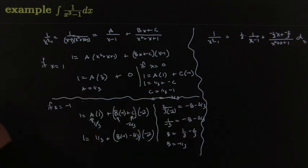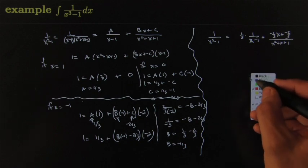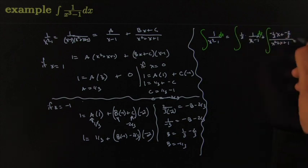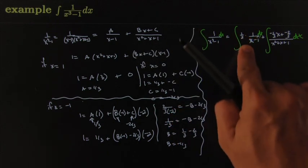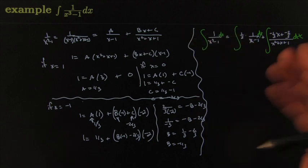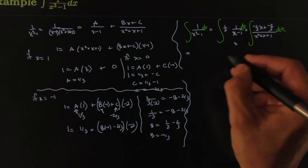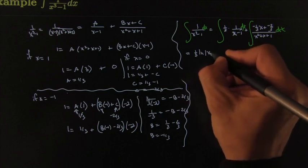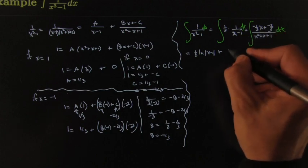The punchline is that this integral with respect to x equals that sum of integrals with respect to x, and those are easier to do than the original. The first piece is just a log — you eyeball it. This one maybe requires a little more interesting work. The first piece: just ln|x - 1| and you're done.